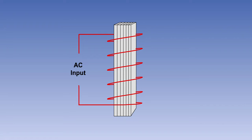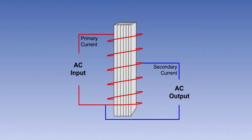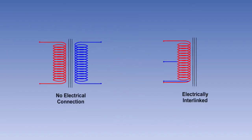An auto-transformer uses a single winding on a laminated core with a pick-off at a predetermined point along the coil. As you can see, part of the coil carries both the primary and secondary current because it is common to both windings. Auto-transformers are less expensive than two-coil transformers because they use less materials. However, one of the major advantages of two-coil transformers is that the primary and secondary circuits are electrically isolated from each other, and this is not so in auto-transformers, so their use is limited to situations where this is not important.